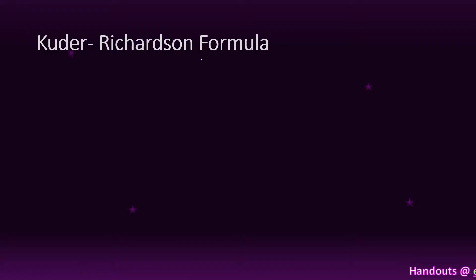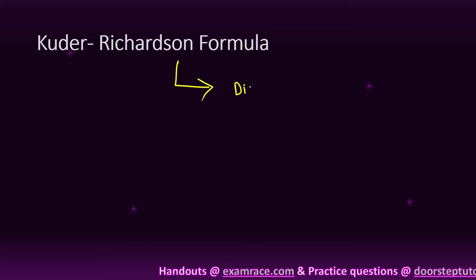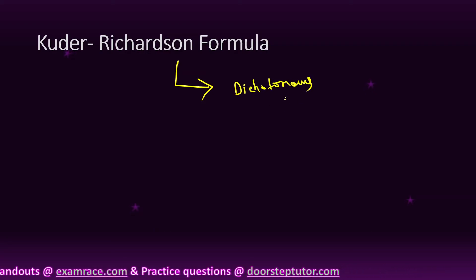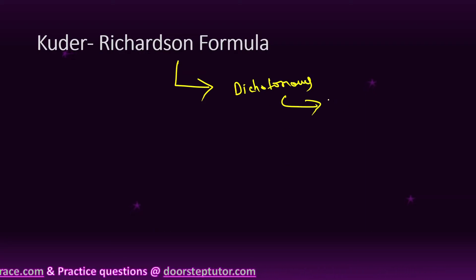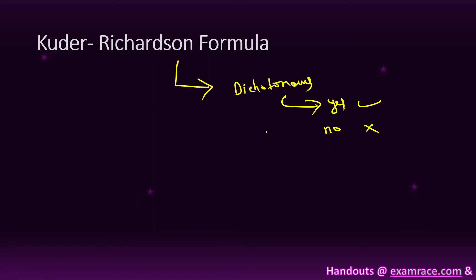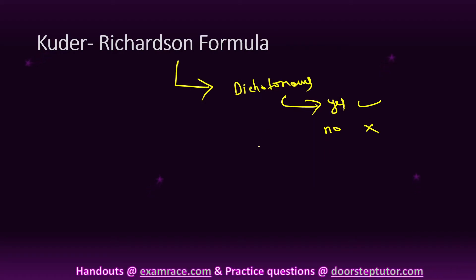What is the Kuder-Richardson formula? Kuder-Richardson is used when the item is dichotomous only. What is the meaning of dichotomous? When the answer comes like yes or no only. So Kuder-Richardson formula is used when the item is dichotomous, and it is divided into two parts: KR-20 and KR-21.